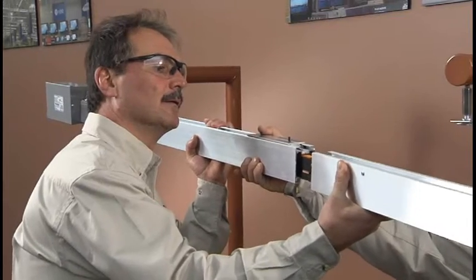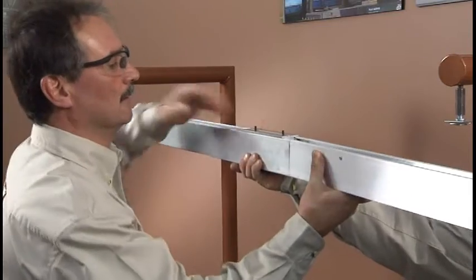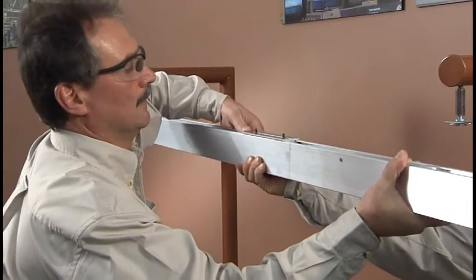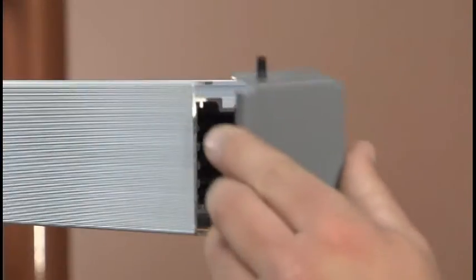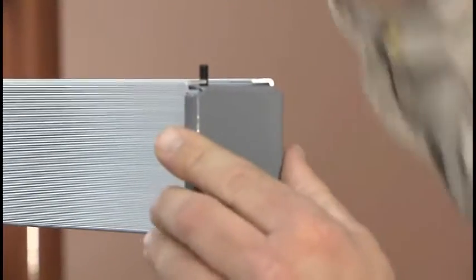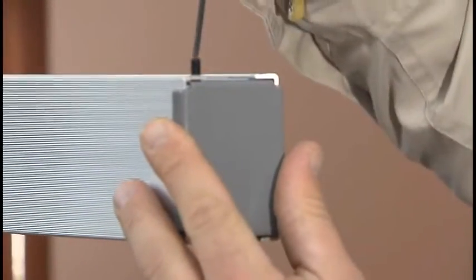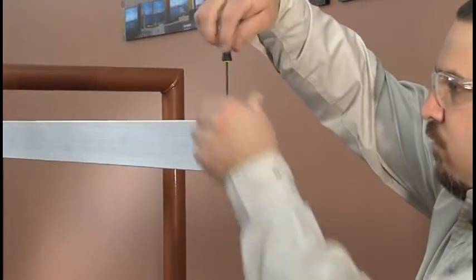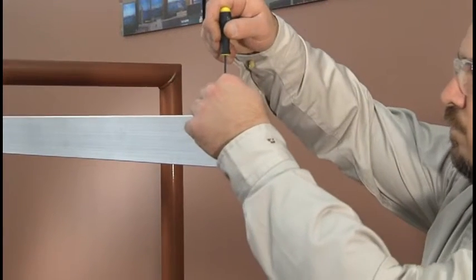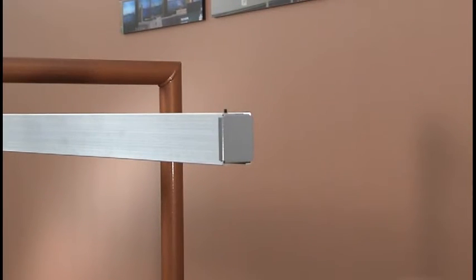Note that elbows and T's are installed the same way as the busway straight sections. Once the busway is hung, install the end cap at the end of the busway run and tighten the set screw to secure it in place. It is necessary to install end caps for finger safety.